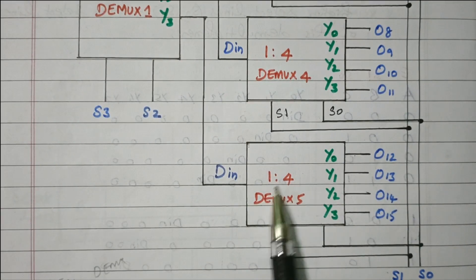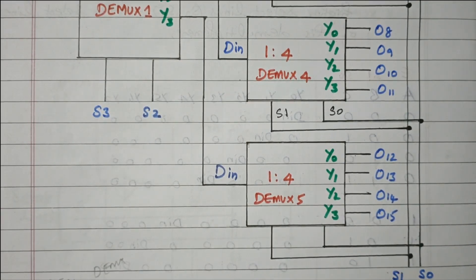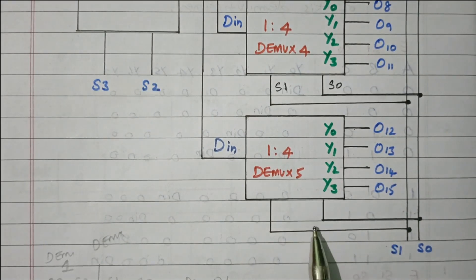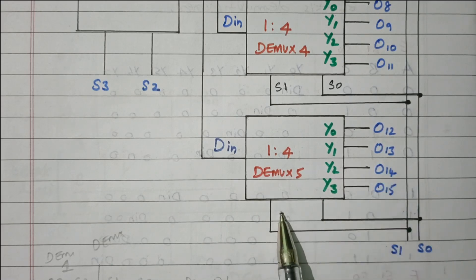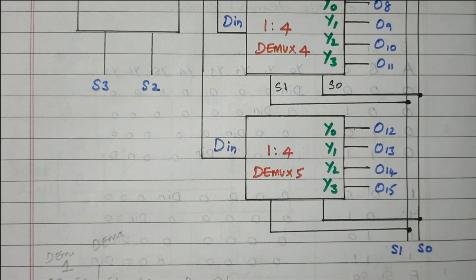When S3S2 is 11, DMUX5 is enabled, and we get data from D12 to D15. S0 and S1 are connected here as well: 00 means D12; 01 means D13; 10 means D14; 11 means D15. The remaining demultiplexers DMUX2, DMUX3, DMUX4 are all disabled; only DMUX5 is enabled. So we are having 4 demultiplexers giving 4 into 4 equals 16 outputs, controlled by one more 1-to-4 demultiplexer. That controlling demultiplexer uses selection line S3 and S2, and the 4 demultiplexers use selection lines S0 and S1, so we get 16 different outputs.